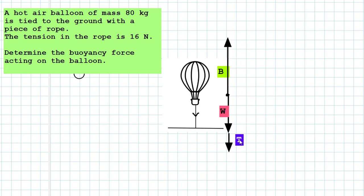Looking at the forces in this configuration, we can write down a simple expression. The upward force — the buoyancy force — must equal the sum of the downward forces: the weight plus the tension due to the rope.